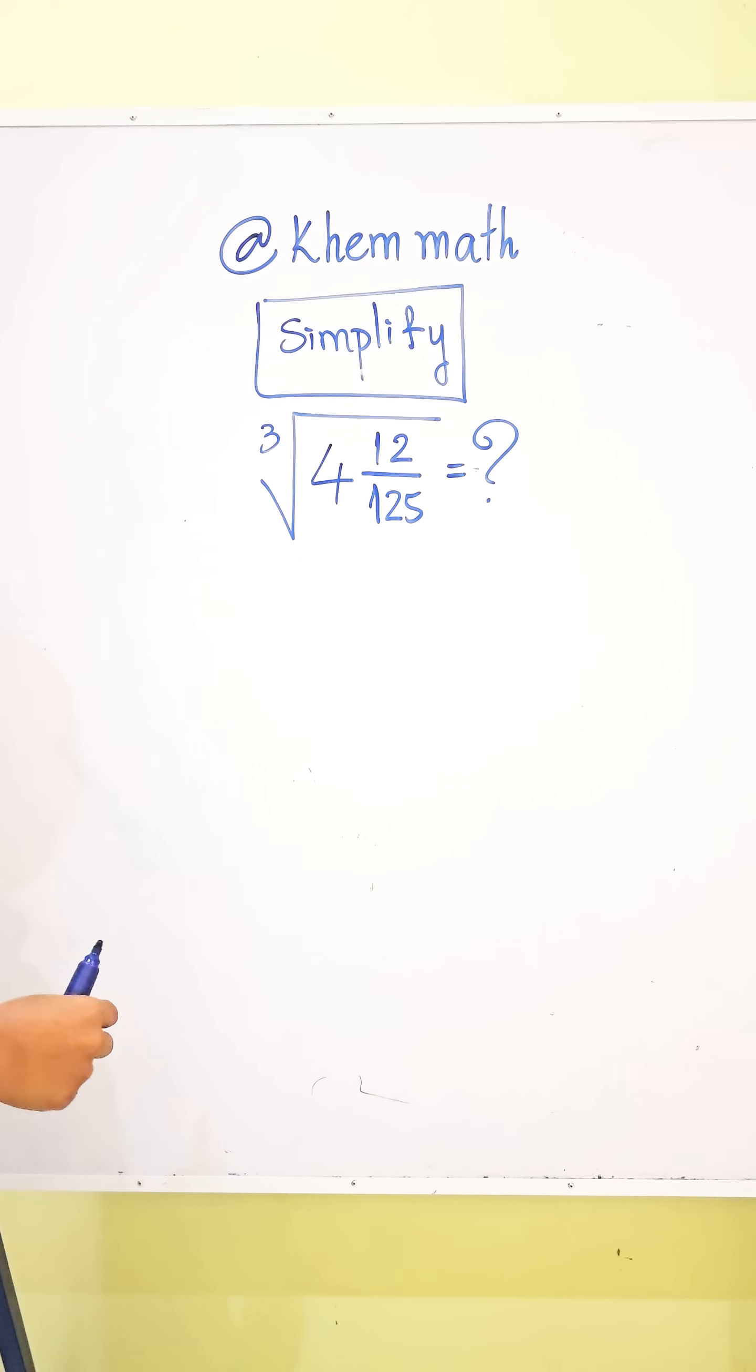Simplify cube root of 4 and 12/125. It is the cube root of a mixed number, so we must convert it to a fraction.